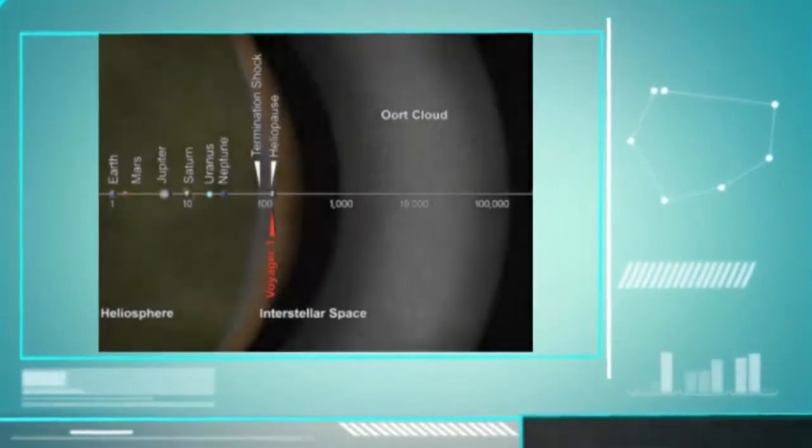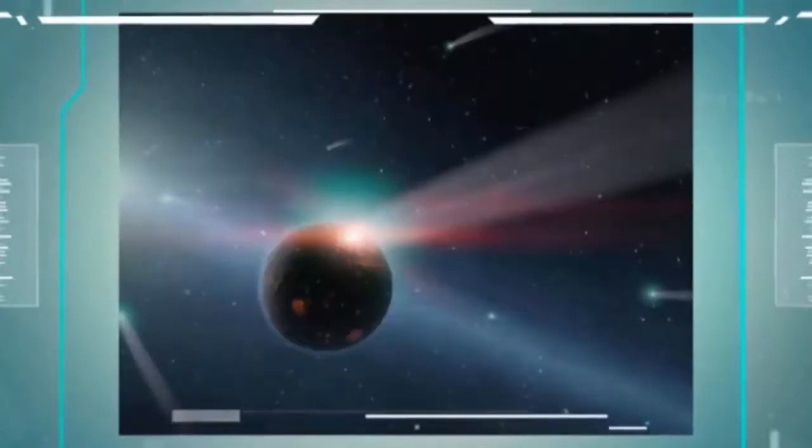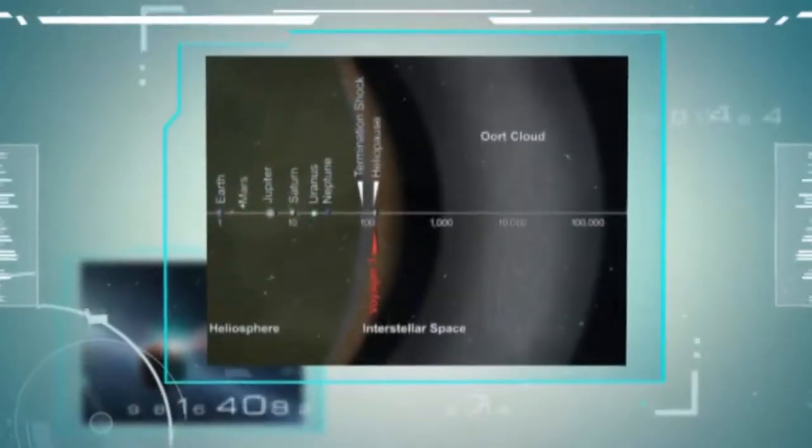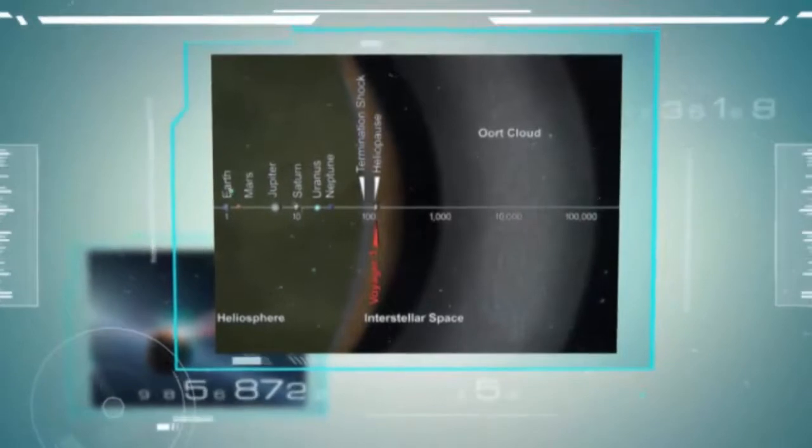so the star could actually come as close as 7,250 astronomical units, or around 0.11 light-years. The Oort cloud ranges from 0.8 to 3.16 light-years from the Sun,